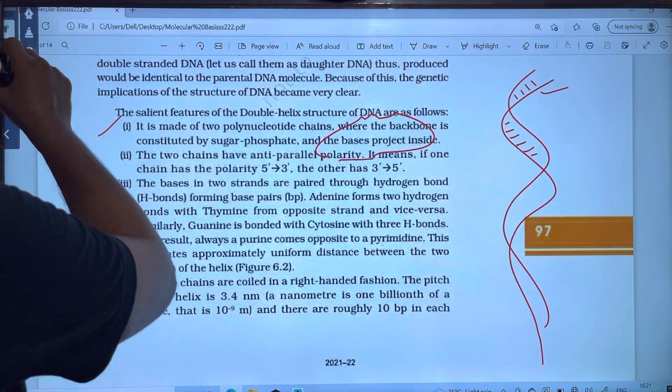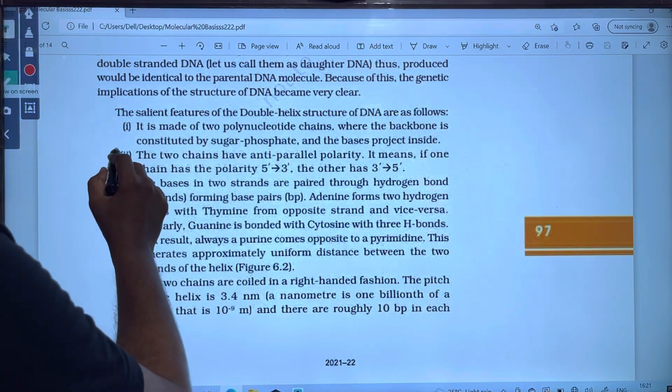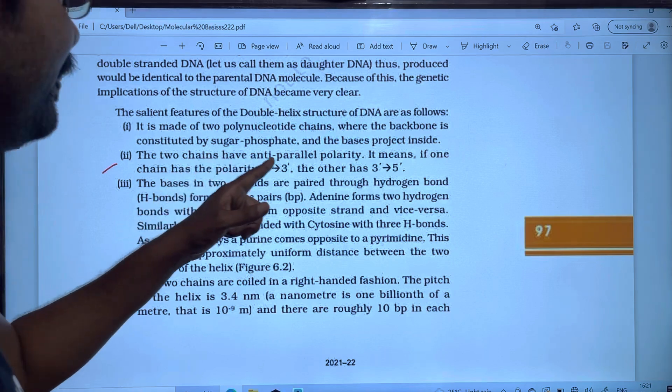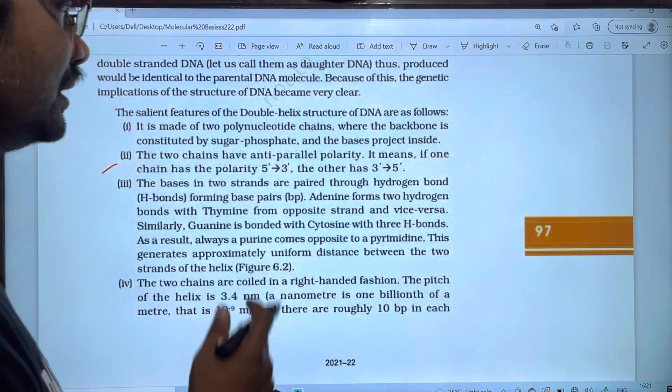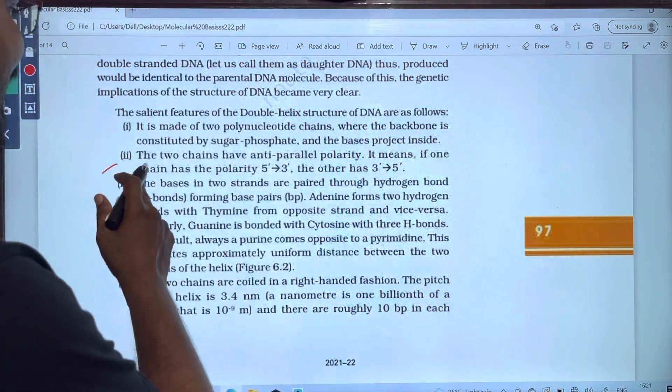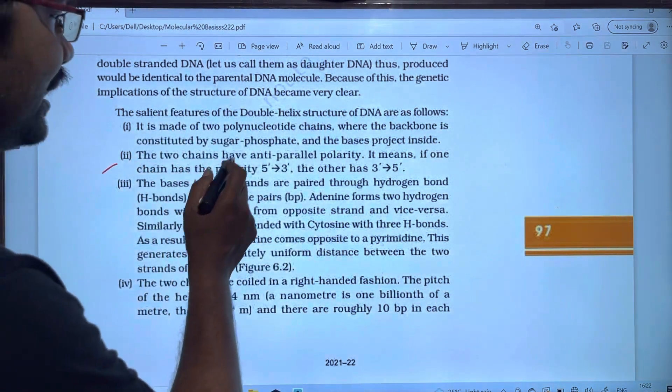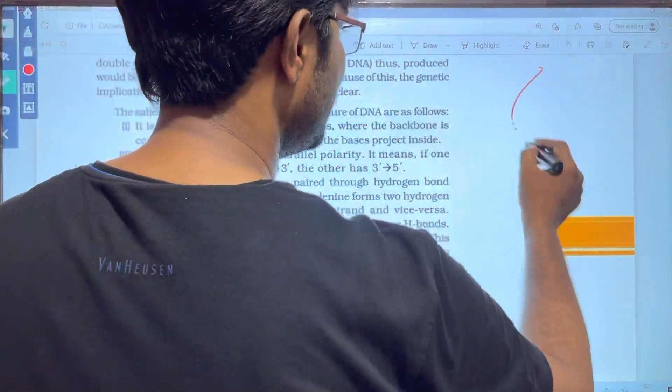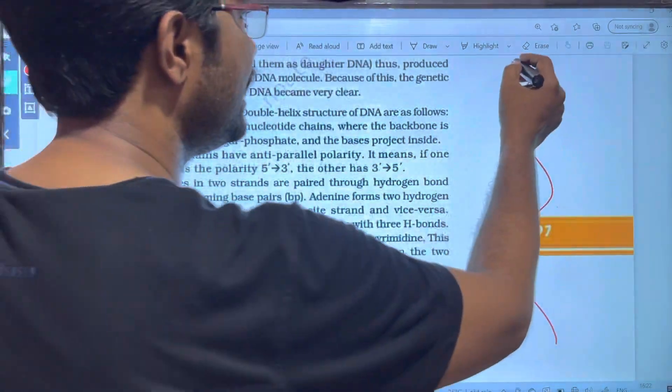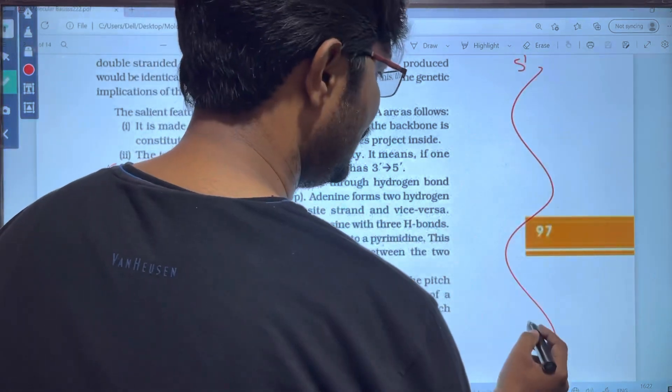The second point is that two chains have anti-parallel polarity. It means that if one chain has the polarity 5' to 3', then the other has 3' to 5'. For example, this is a strand.